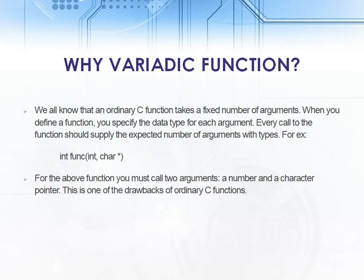Why do we need a variadic function? Let's talk about ordinary C functions. We know ordinary C functions can take a fixed number of arguments. For example, if I define a function int func open parenthesis int comma character asterisk, for this function you must call two arguments which is a number and a character pointer. This is one of the drawbacks of ordinary C functions as it can take fixed number of arguments.